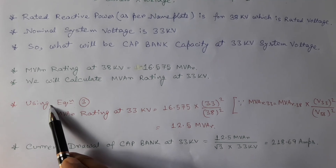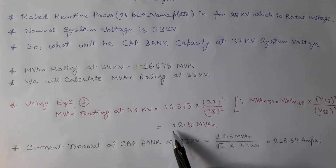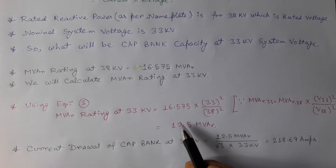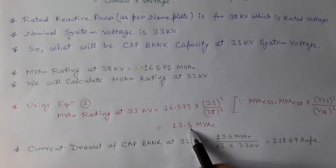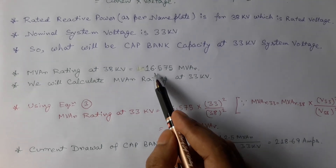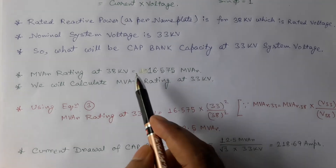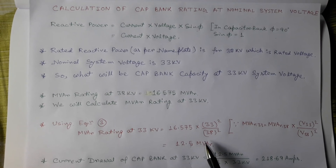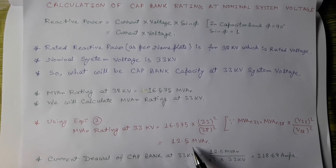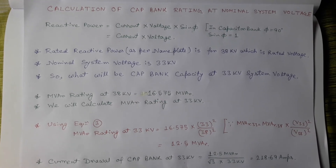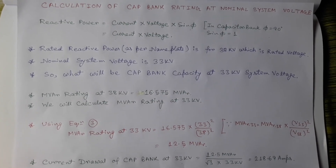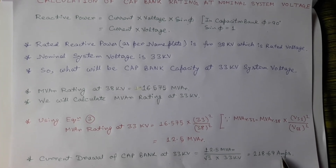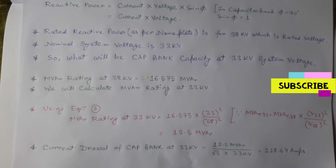Using equation 3, the reactive power or mVar rating of the capacitor bank at 33 kV is calculated to be 12.5 mVar. Using this calculated reactive power rating at 33 kV, we can also determine the current through the capacitor bank at 33 kV, which is 218 amperes in this case.